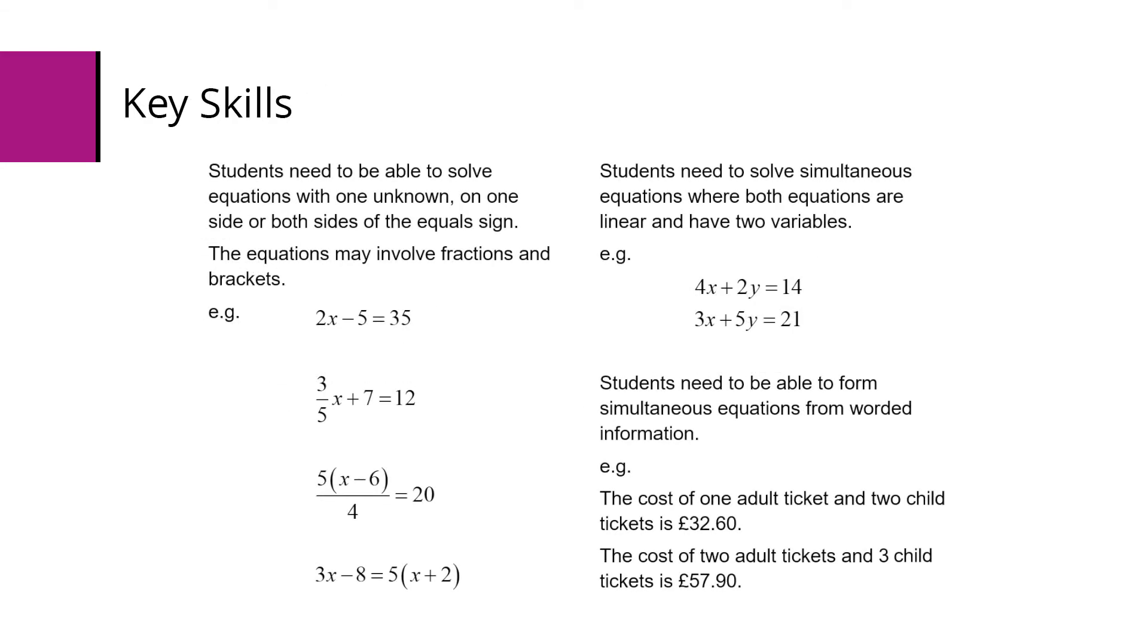The key skills needed for this topic: students need to be able to solve equations with one unknown on either one side or both sides of the equal sign. These equations may involve fractions and brackets. Students also need to be able to solve simultaneous equations where both equations are linear and have two variables. They must also be able to form these equations from worded information.